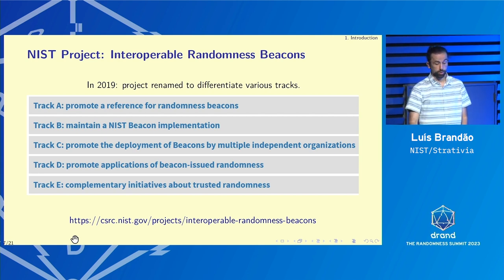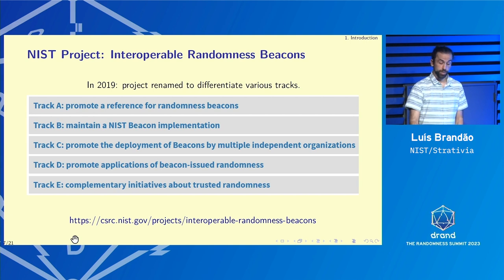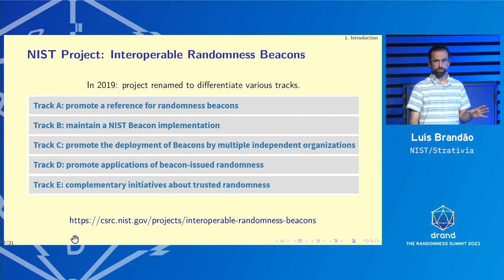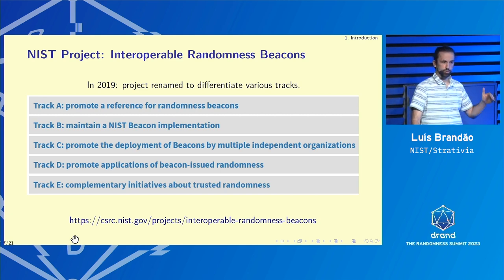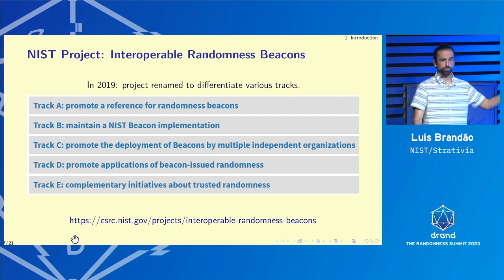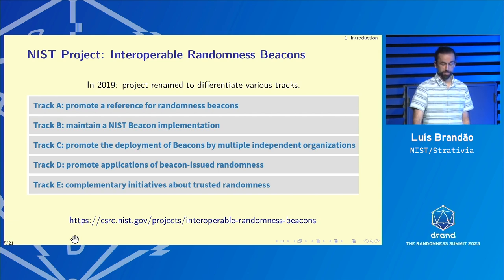As track C, we want to promote deployment of various beacons by multiple independent organizations. Currently there's one in the US at NIST, one in Brazil by INMETRO, and one in Chile. We would like to promote applications of beacon-issued randomness — a lot needs to be done here. We also support complementary initiatives about trusted randomness. For example, you can use quantum supremacy to enable certified randomness — a very counterintuitive concept. You can have randomness that you can prove has been freshly sampled based on quantum supremacy: if you have a small seed, you can use it in a quantum computation such that the output can be proven to have been sampled after you had that seed.